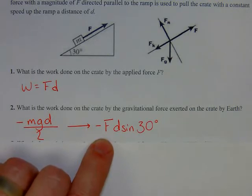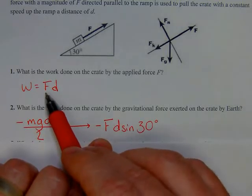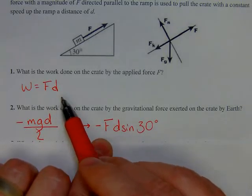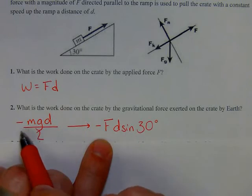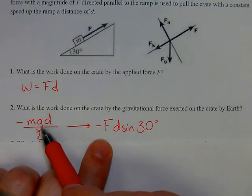Again, you can also write it as negative mgd. That's totally fine because, remember, force is equal to mass times acceleration or mass times acceleration due to gravity. So these are interchangeable.